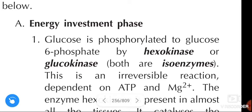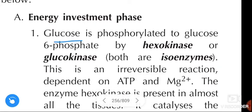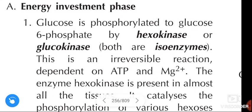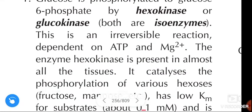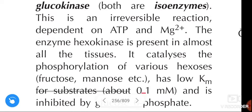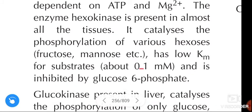In the energy investment phase, glucose is phosphorylated to glucose-6-phosphate by hexokinase or glucokinase — both are isoenzymes. This is an irreversible reaction dependent on ATP and magnesium ion. The enzyme hexokinase is present in almost all tissues. It catalyzes the phosphorylation of various hexoses including fructose and mannose, and has a low Km value for substrates of about 0.1 millimolar.